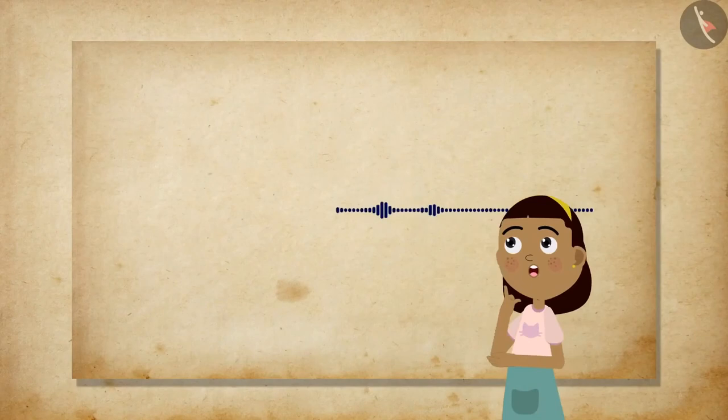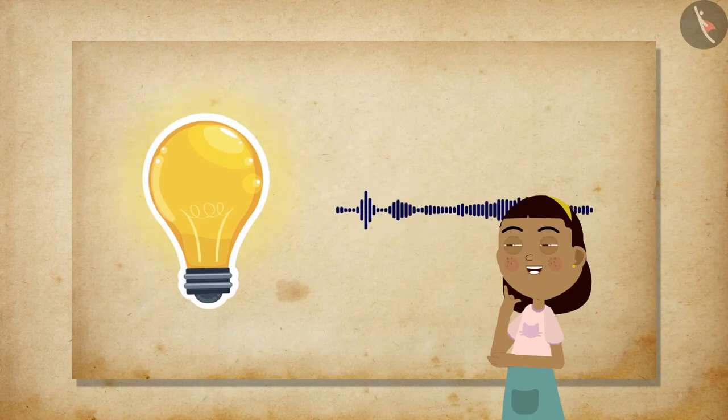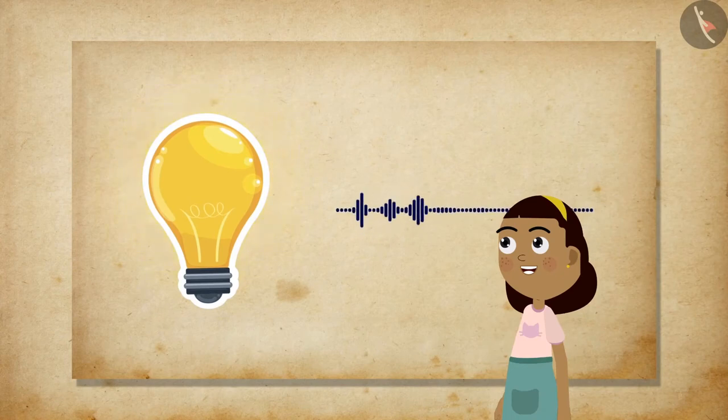One example of a transverse wave is light. But in light, the oscillations are not of the medium particles or pressure or their density, as it is not a mechanical wave.